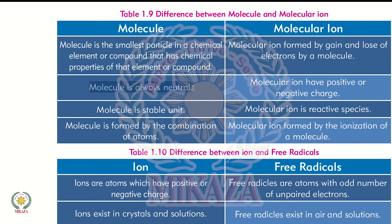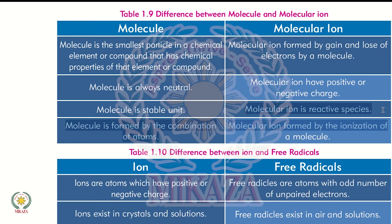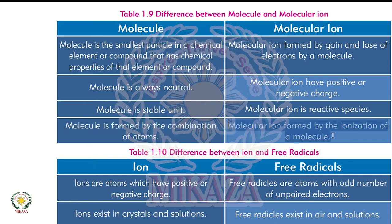A molecule is always neutral — it does not carry a positive or negative charge. But a molecular ion, because of the gain or loss of electrons, can be positively or negatively charged. A molecule is a stable unit because the atoms have reacted and formed a stable structure. A molecular ion is a reactive species because it has gained or lost electrons, making its electron count unbalanced, so it readily reacts with others. A molecule is formed by the chemical combination of atoms, while a molecular ion is formed by the ionization of a molecule.